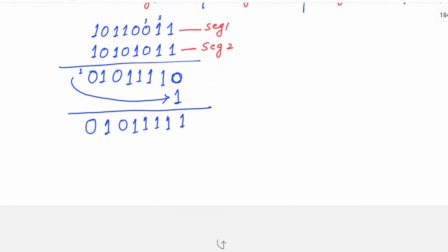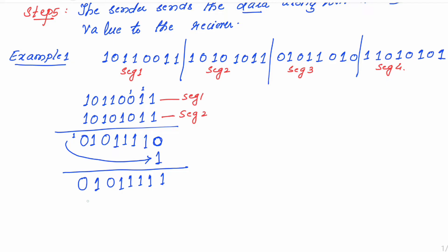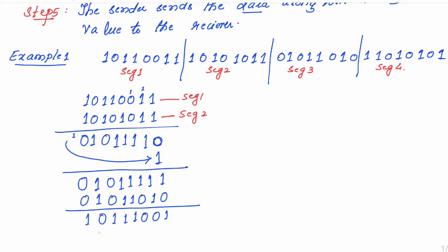Now let me add segment 3 to this. Segment 3 is 01011010. Add: 1 plus 0 is 1, 1 plus 1 is 0 carry 1, 1 plus 1 is 0 carry 1, 1 plus 1 is 0 carry 1, and so on, giving result 10111001. When we added segment 3 with the previous result, we did not get any carry generated. So no need to add the carry bit to the LSB. Your answer after adding segment 3 is 10111001.